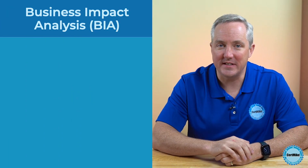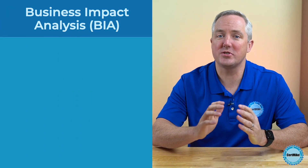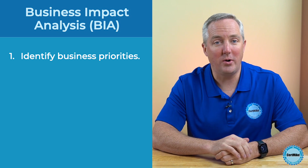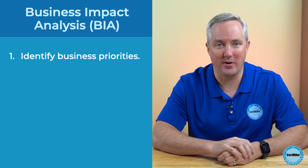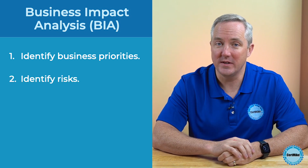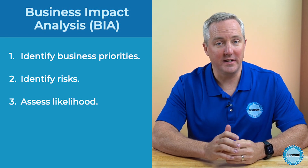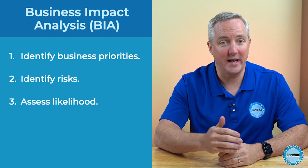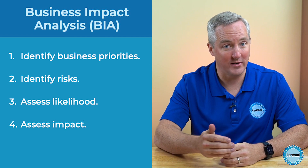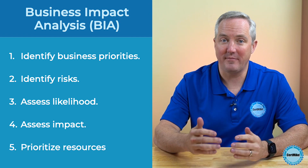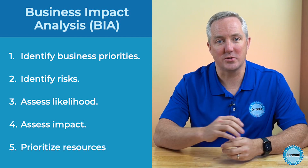We'll dive into each of these steps in detail in just a moment, but here's the big picture. Step one is identifying business priorities. Step two is identifying risks. Step three is assessing the likelihood of those risks, while step four assesses their impact. And finally, step five prioritizes the use of resources.